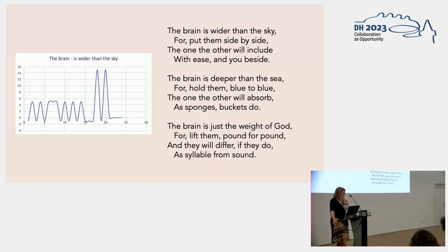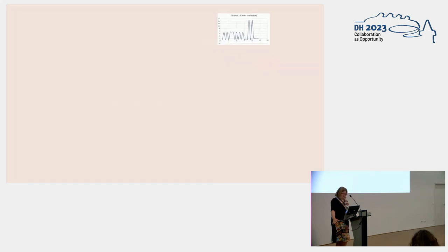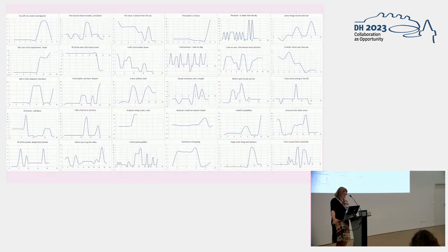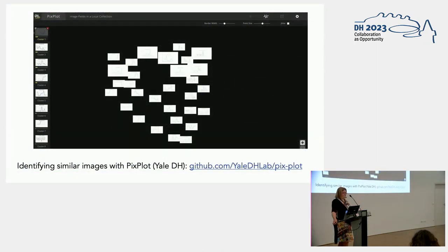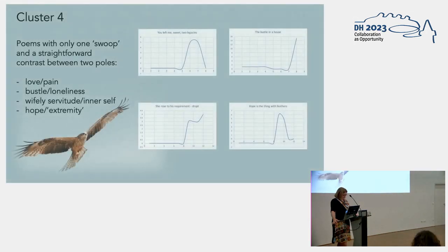I then wondered whether there was any utility to be had from considering the similarity between graphs. With so few words it's really not viable to attempt to cluster this small corpus of poems on the basis of its words, but what about spatialized shapes? To do this I did a small experiment with the PixPlot package developed by Yale DH — normally used with literally thousands of images, so this is a very tiny instance of it. It identified four clusters and put 20 of the 30 images into one of those clusters.